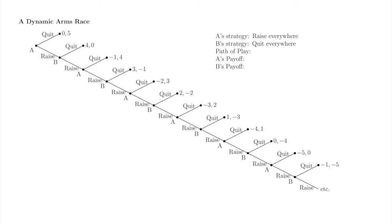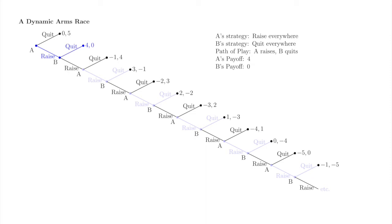Now consider the strategy pair in which A raises at every move and B quits at every move. The branches corresponding to these strategies are marked in blue. The path of play is that A raises, after which B quits and the game ends. A receives payoff four — A receives the $5 prize because B quit, A raised once so A's cost of raises is one, and five minus one is four. B receives payoff zero — B never raised on the path of play, so B's cost of raises is zero, and zero minus zero is zero.